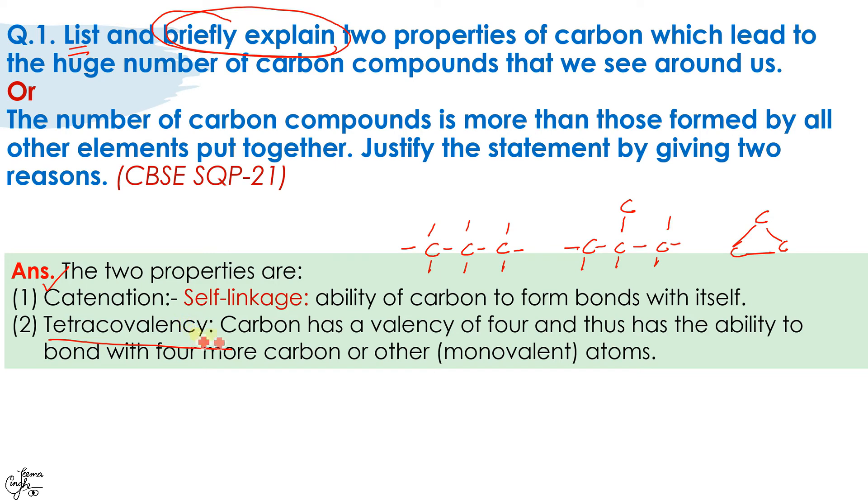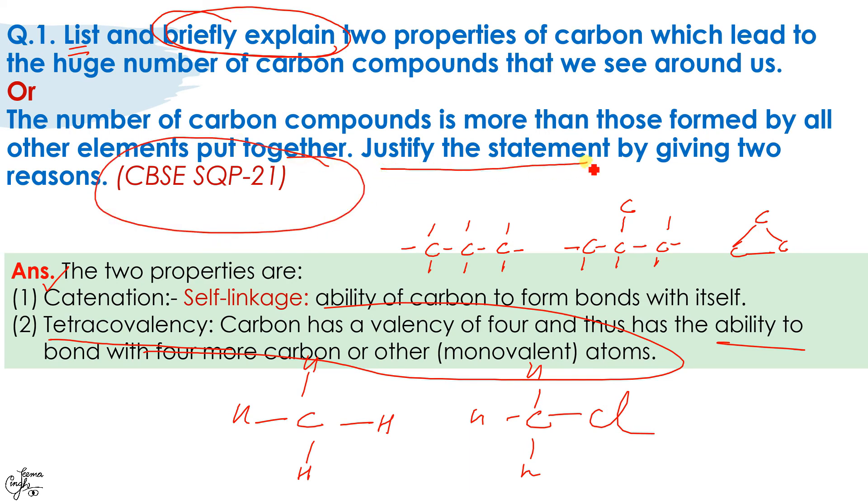Tetracovalency: carbon has a valency of four. First you explain what tetracovalency means, and because it has a valency of four, it has the ability to bond with four more carbon atoms or other monovalent atoms. And again you can give an example showing, say, methane, or simply an example with three hydrogen one chlorine. Even if this type of question is asked, you're supposed to justify the statement by giving two reasons. Justify means you're supposed to write the two properties and at least write one line about it.